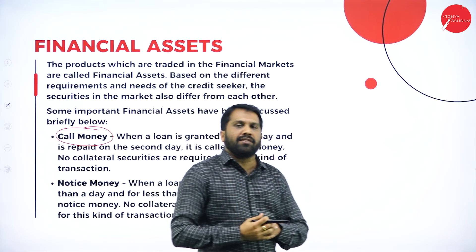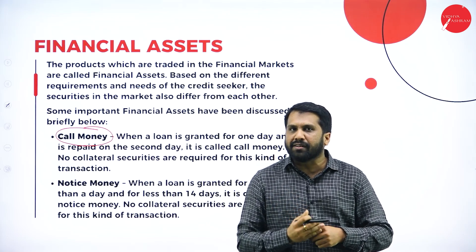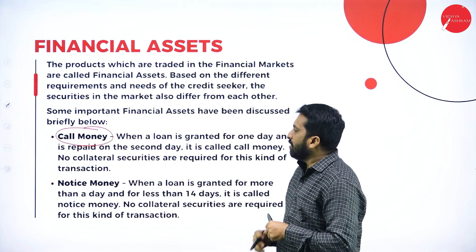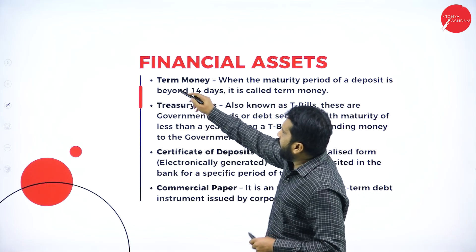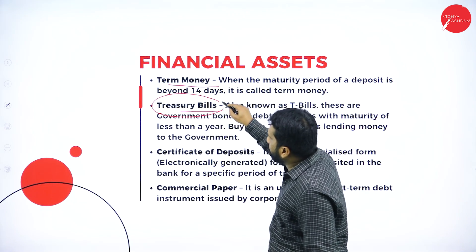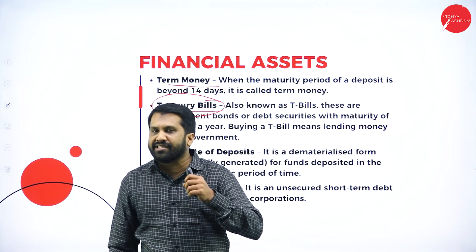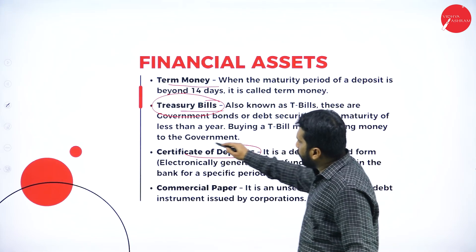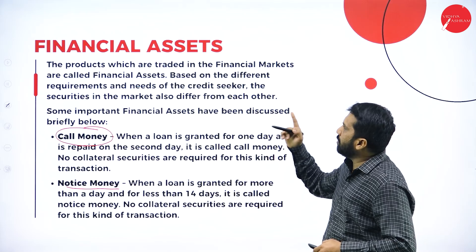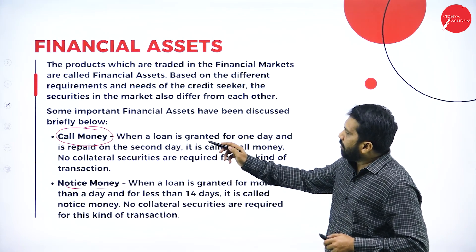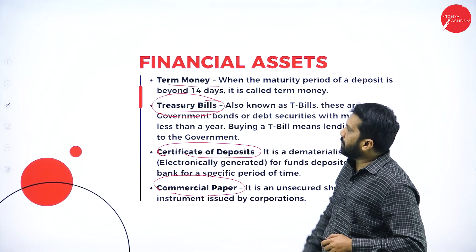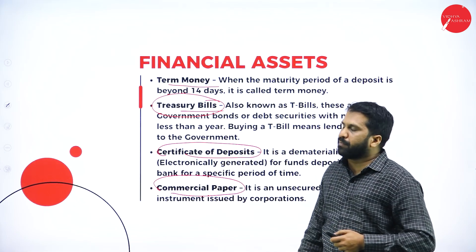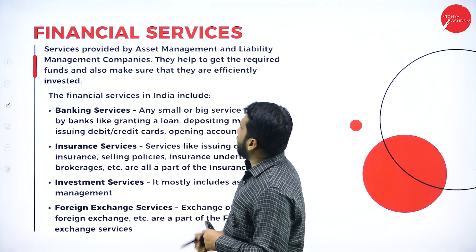Financial assets include: call money — a short-term loan borrowed for less than 14 to 15 days; notice money — where notice is given for payment; term money; treasury bills — the safest and most risk-free investment, always remember that treasury bills are risk-free; certificate of deposits; and commercial papers. These are the examples of financial assets, categorized by number of days.